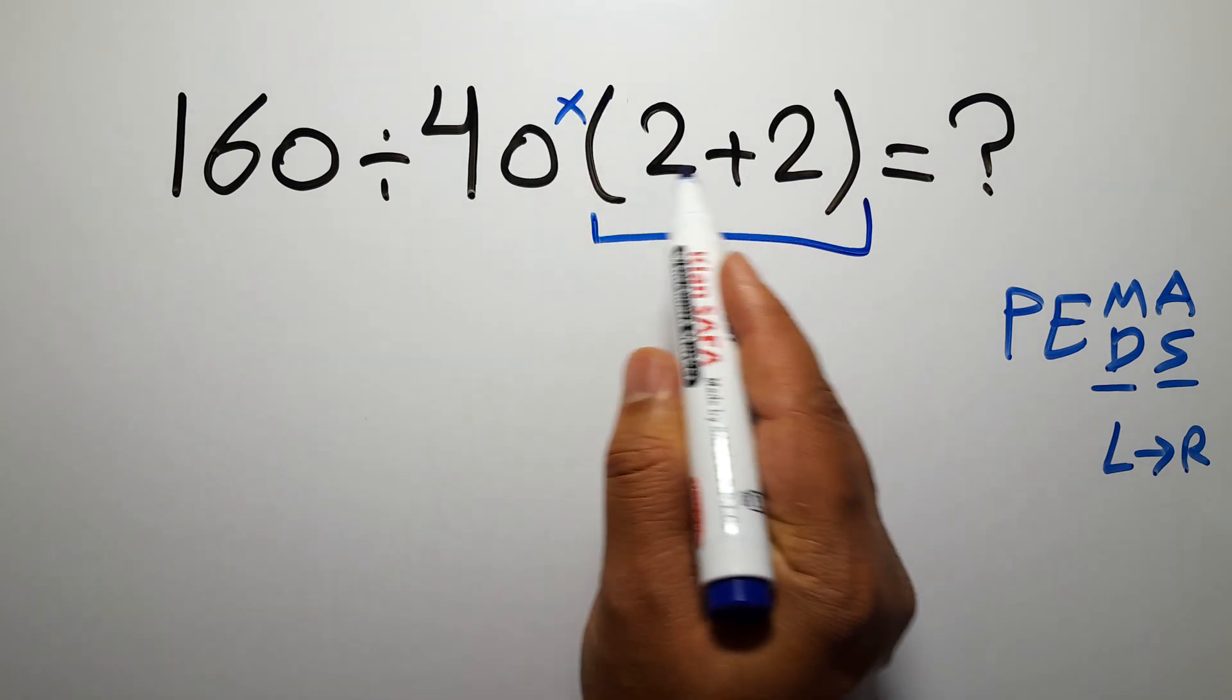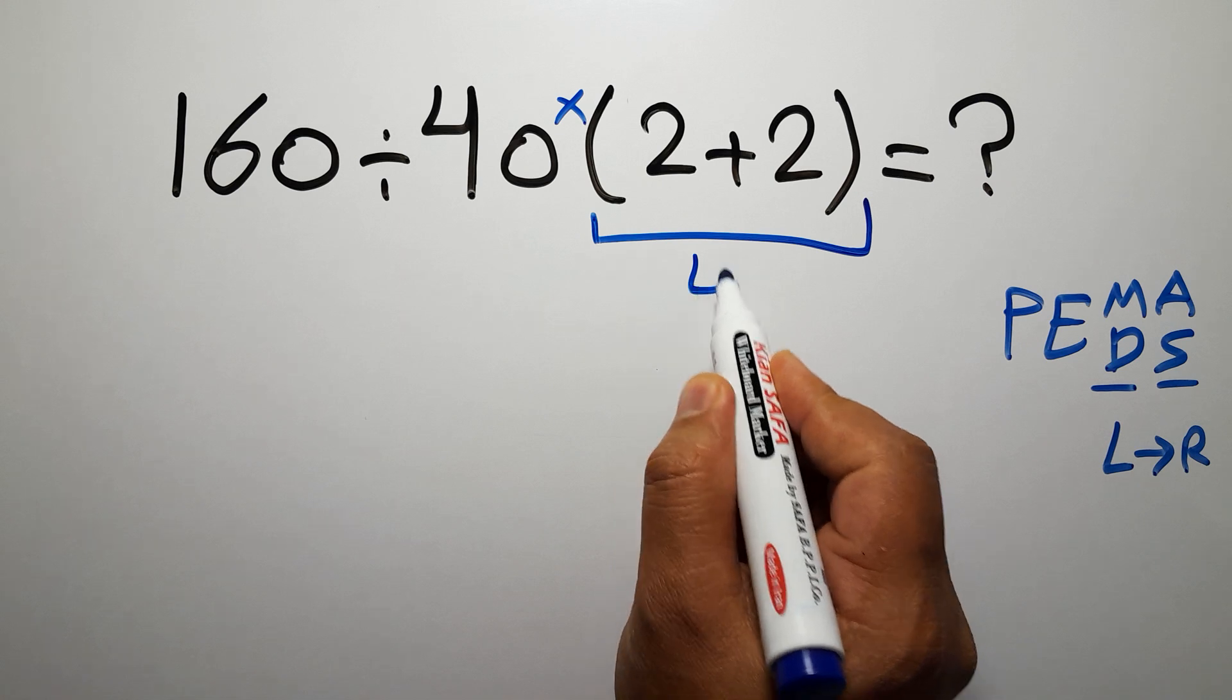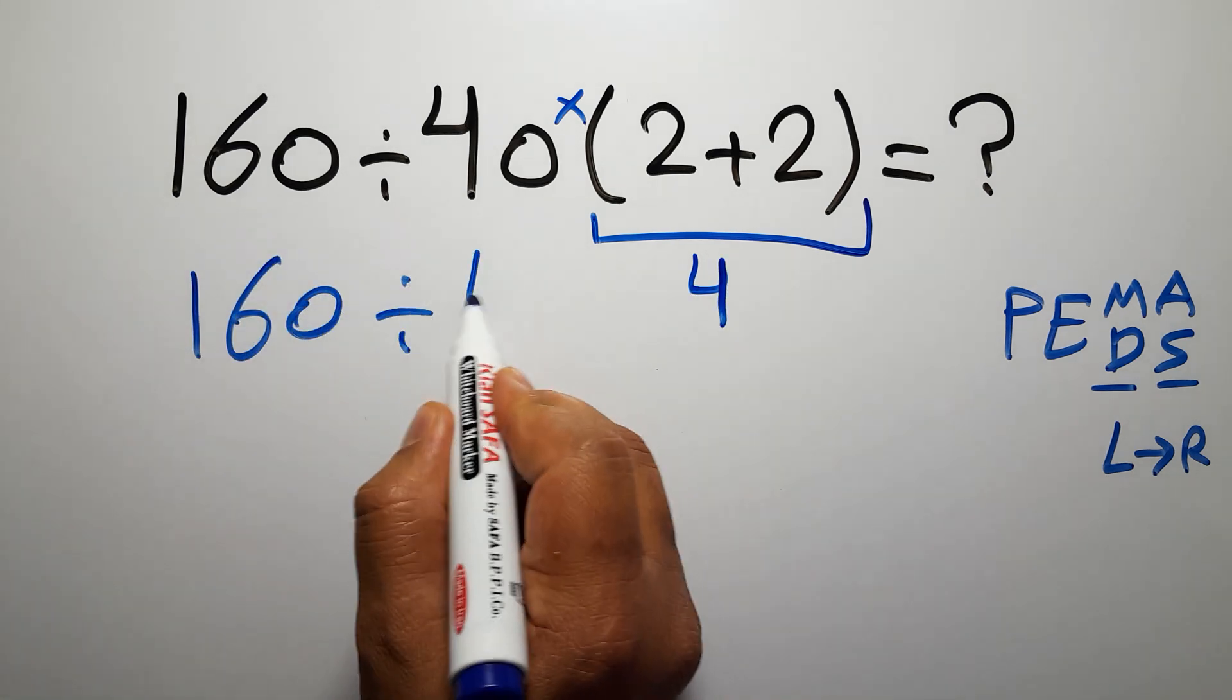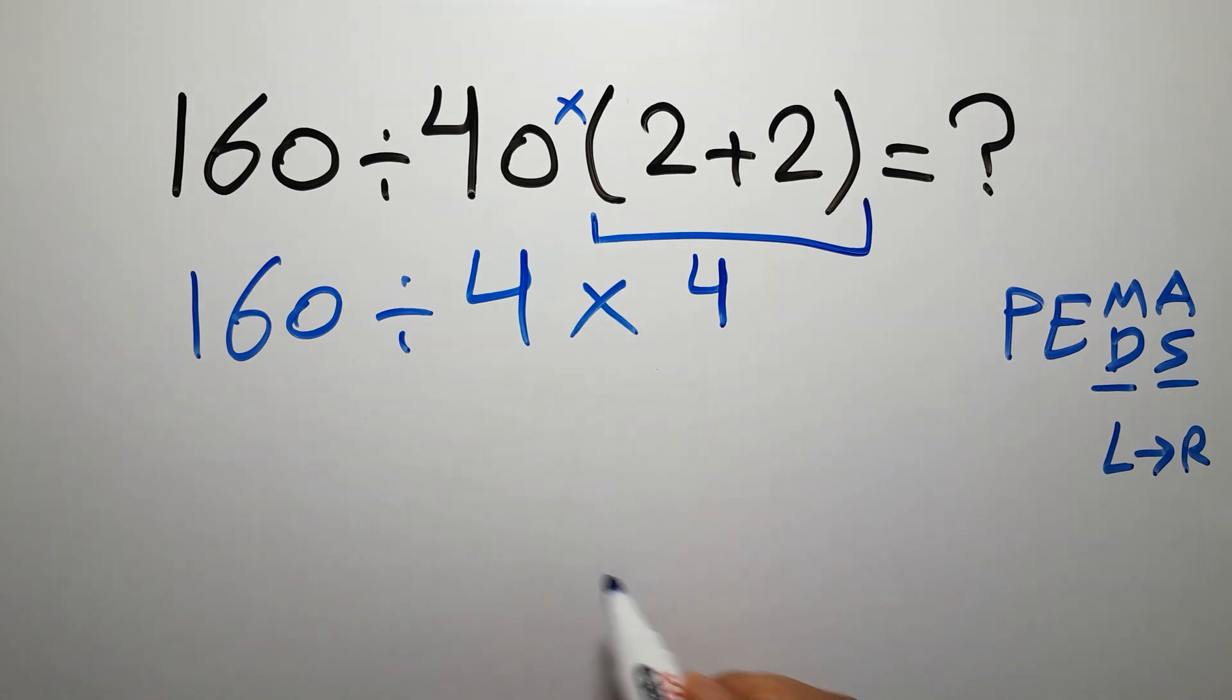Okay? Inside these parentheses, we have 2 plus 2, which equals 4. So we have 160 divided by 40, then times 4.